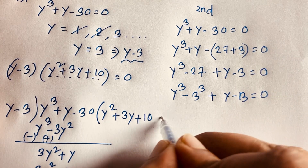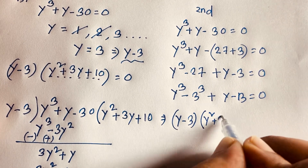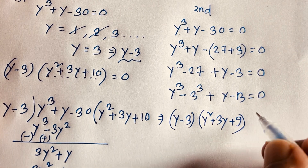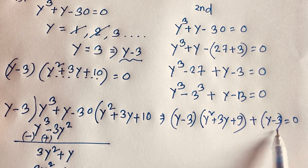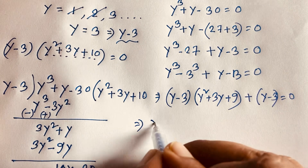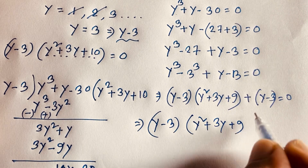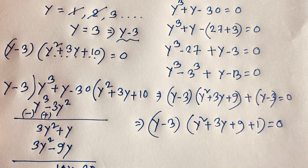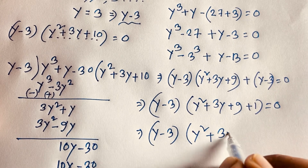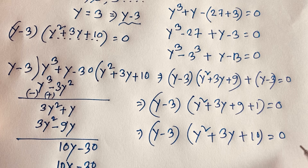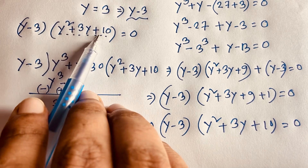We recognize y³ − 27 as y³ − 3³, a difference of cubes. Using the formula a³ − b³ = (a − b)(a² + ab + b²): y³ − 3³ = (y − 3)(y² + 3y + 9). Then y − 3 is also a factor of (y − 3), so factoring out (y − 3) gives: (y − 3)(y² + 3y + 9 + 1) = (y − 3)(y² + 3y + 10) = 0.